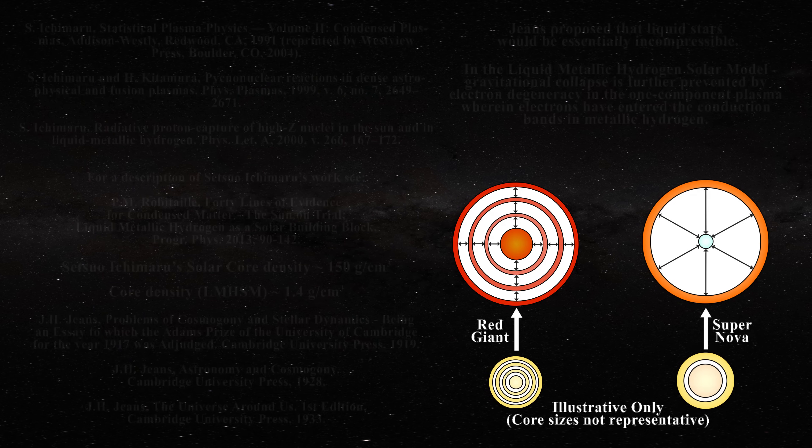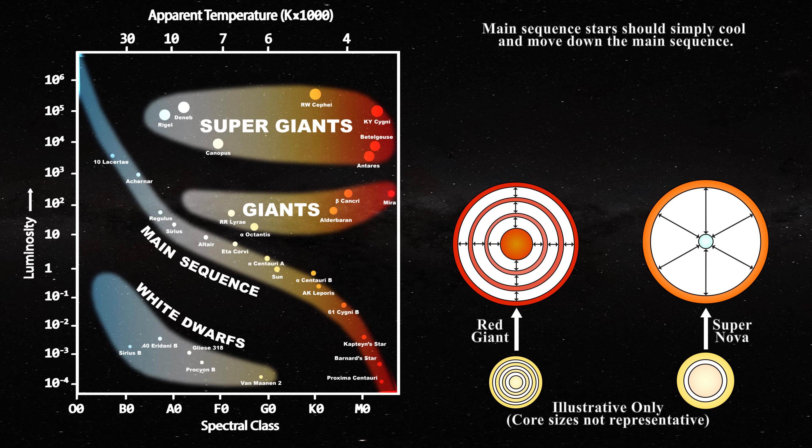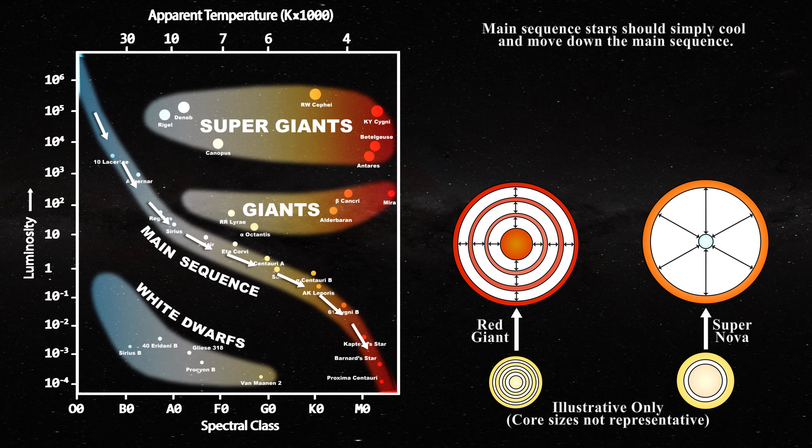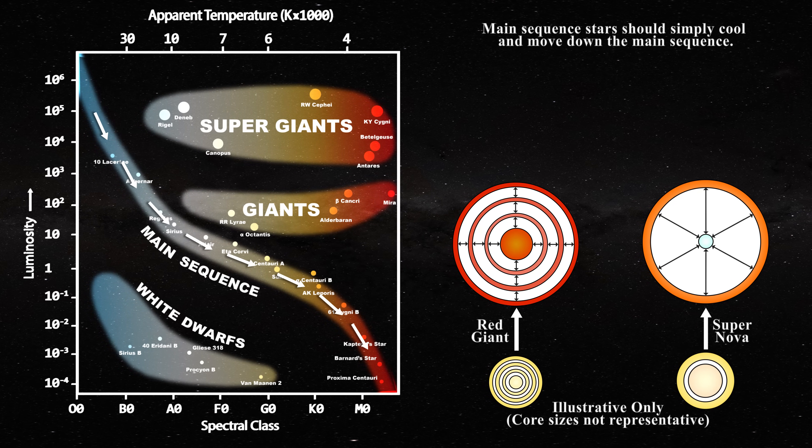Based on the metallic hydrogen solar model, as a star ages it should simply cool and move down the main sequence. This is what is rationally expected for a cooling object. Ideally, the Sun should be stable and cool slowly.